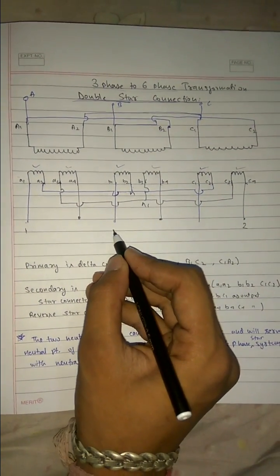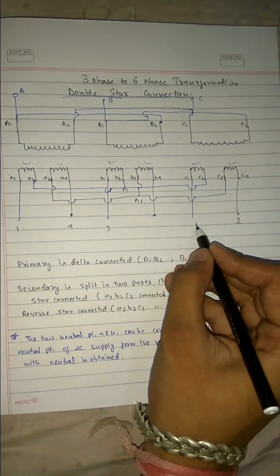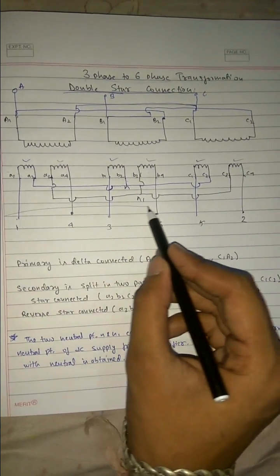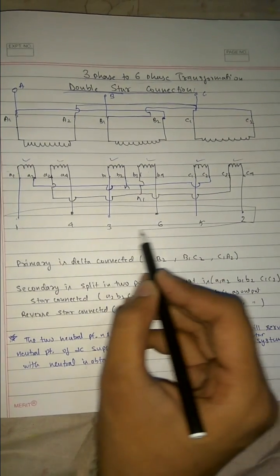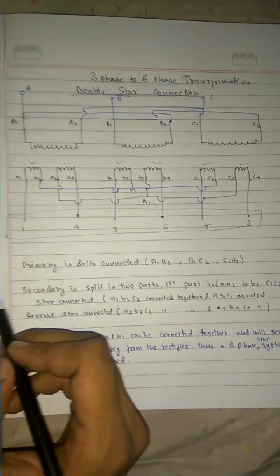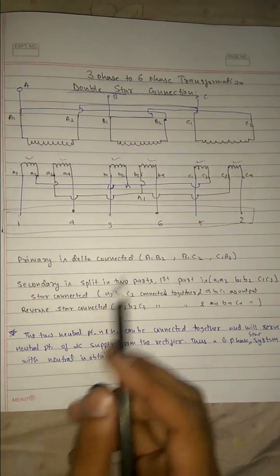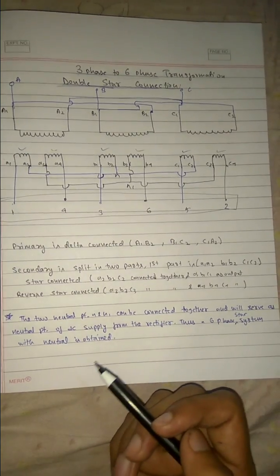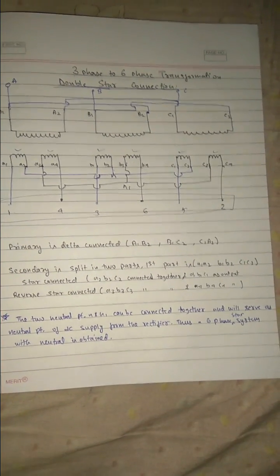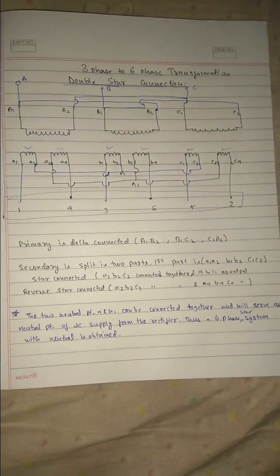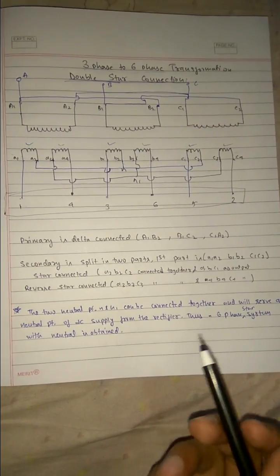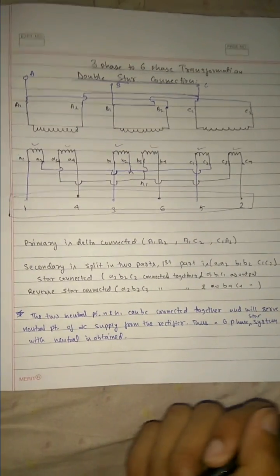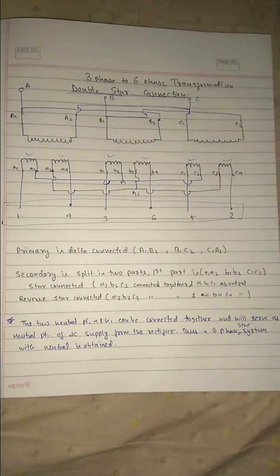From 3-phase we have got 6-phase. And one more thing: in this the neutrals can be connected together so it will serve as a neutral point for the DC supply from the rectifier. So a neutral will be obtained and rectification is good because neutral is available.